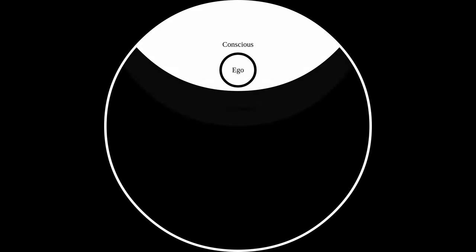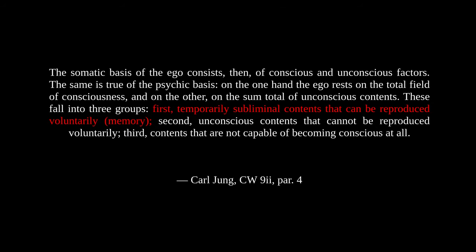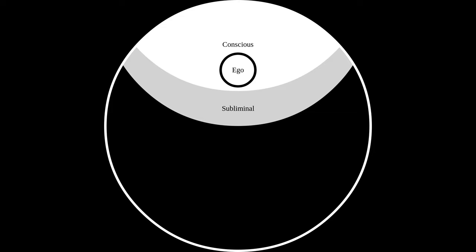The second I'm going to call subliminal. I don't believe Jung ever explicitly gives this a name, but he alludes to it in multiple places, and I believe it's a valuable distinction to make. This is whatever content is not currently conscious, but that the ego may call into consciousness at will. The most obvious example would be memory. Do you remember what you had for your last meal? Unless you're eating it right now, it probably wasn't on your mind. But the moment I asked, you were probably able to call the memory forth. That is what I mean by subliminal.